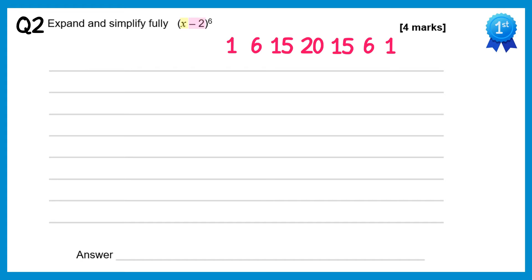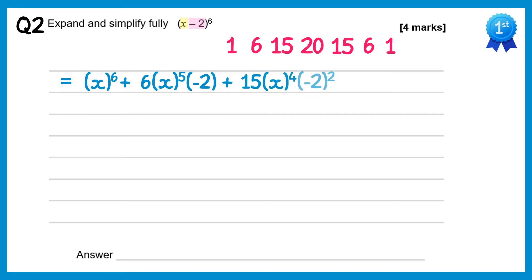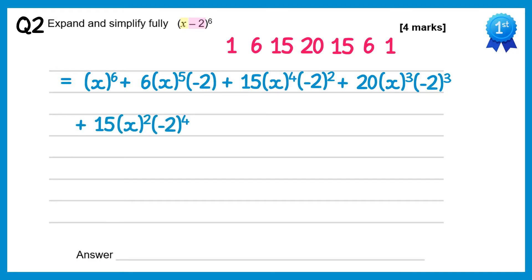So we start with x to the power 6, plus 6 lots of x to the power 5 times negative 2, plus 15 lots of x to the power 4 times negative 2 squared, plus 20 lots of x to the power 3 times negative 2 cubed, plus 15 lots of x squared times negative 2 to the power 4, plus 6 lots of x times negative 2 to the 5, plus negative 2 to the 6.